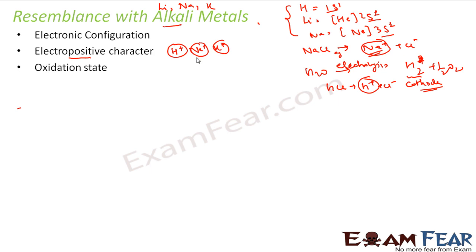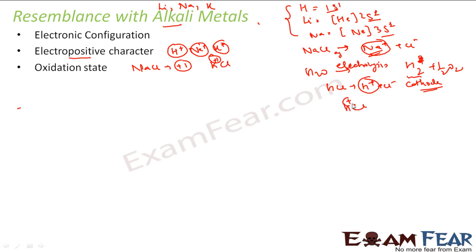The next resemblance is oxidation state. For sodium the oxidation state is +1, for potassium the oxidation state is +1. For hydrogen also, in most cases the oxidation state is +1. So the oxidation state of +1 is common for both alkali metals and hydrogen.